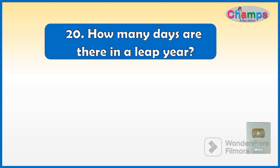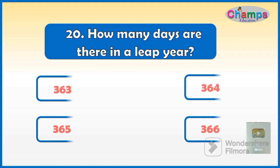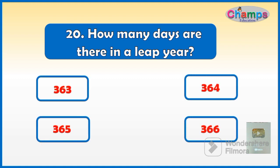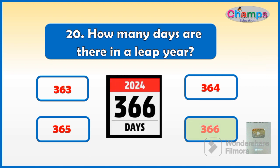How many days are there in a leap year? Your options are: 363, 364, 365, 366. And your time starts now. And the correct option is 366 days.